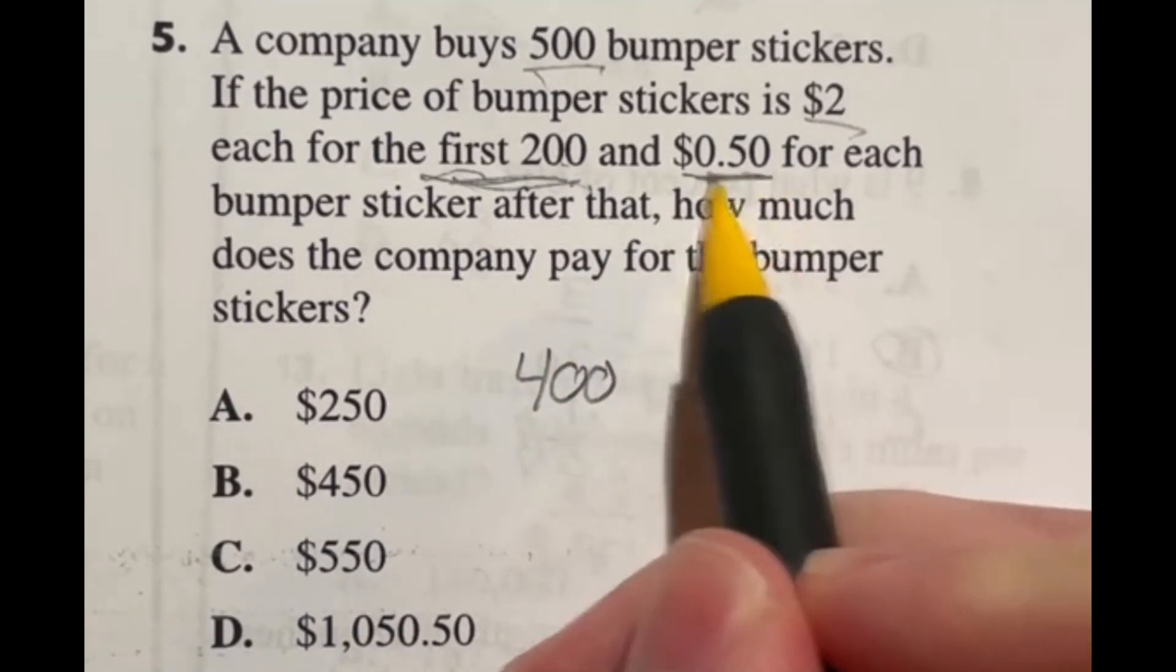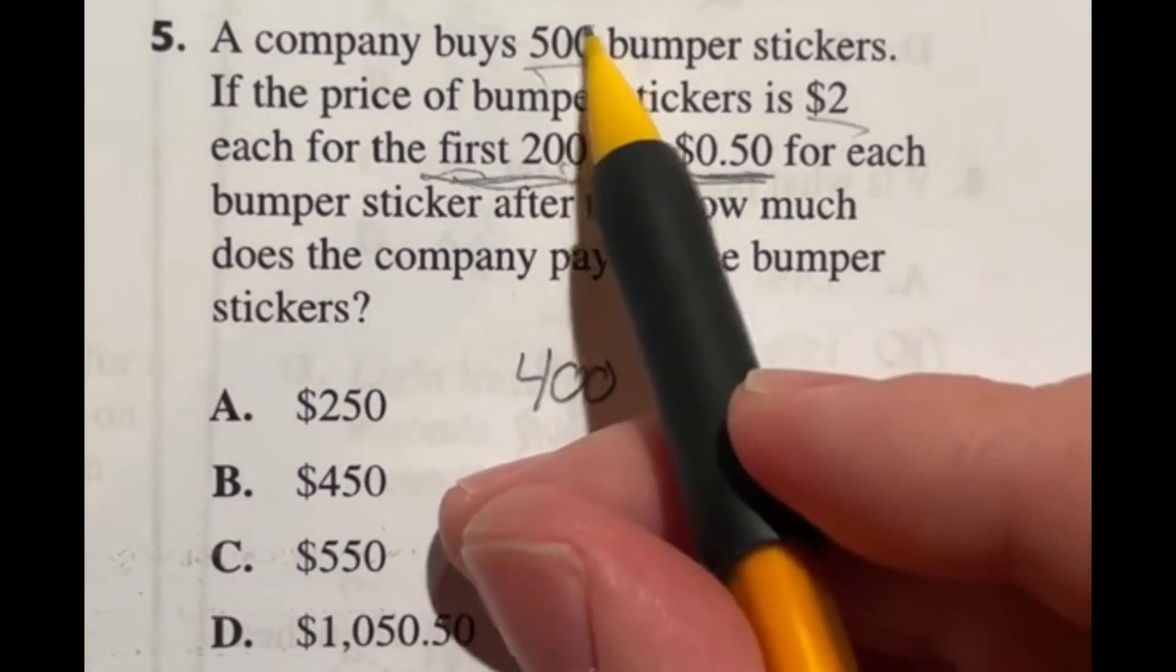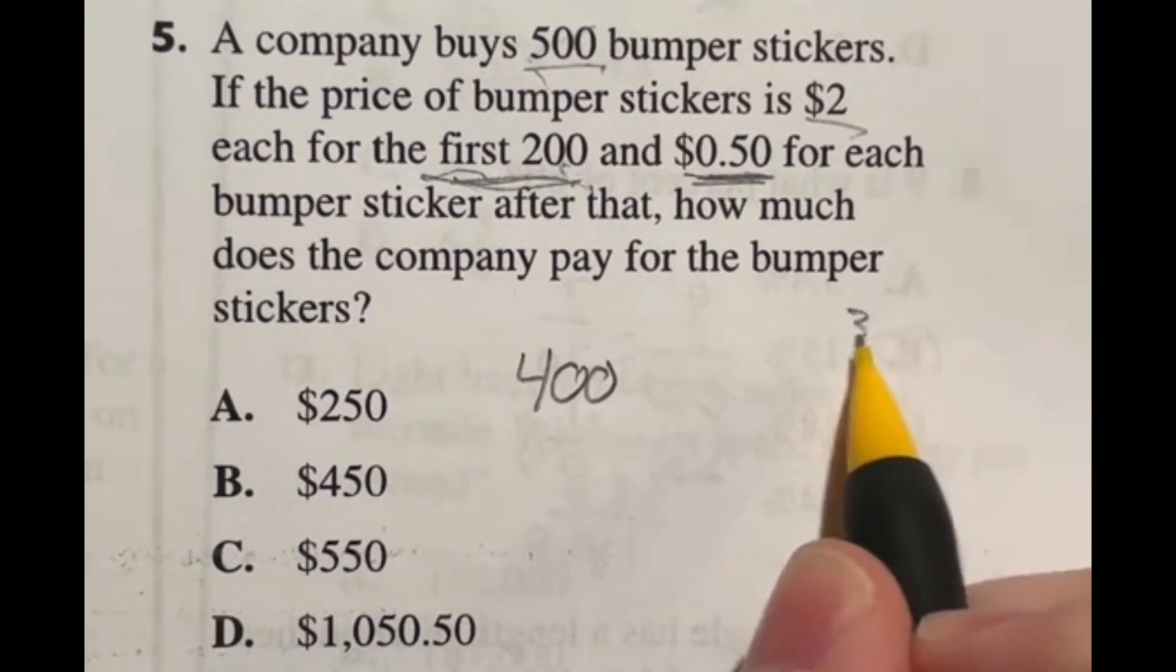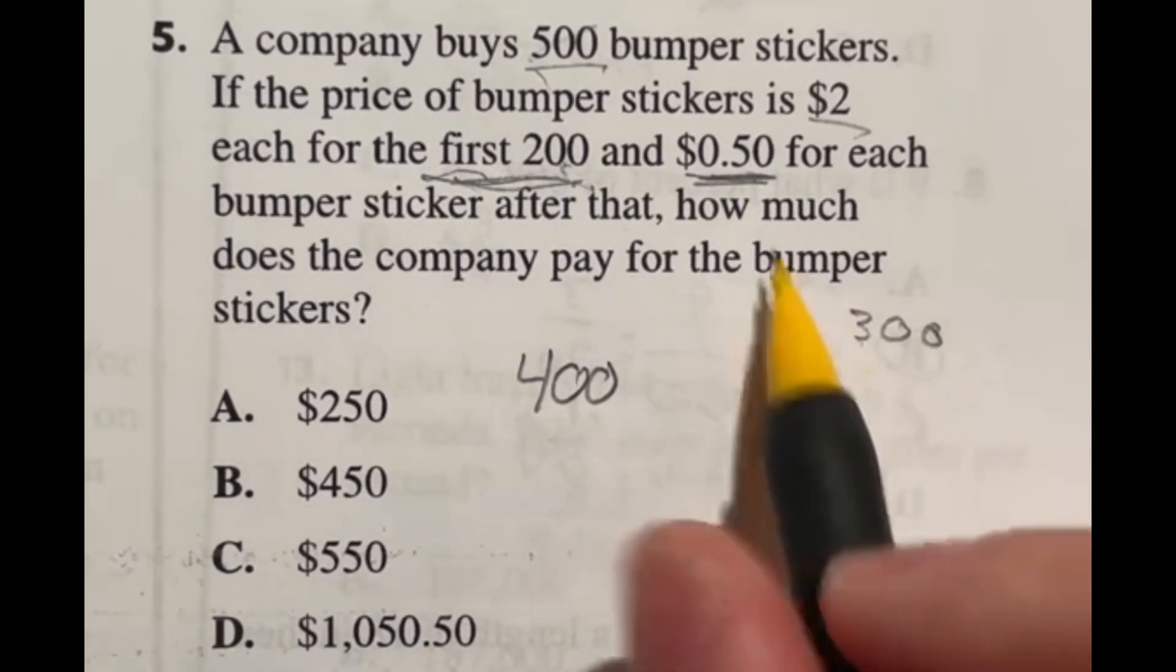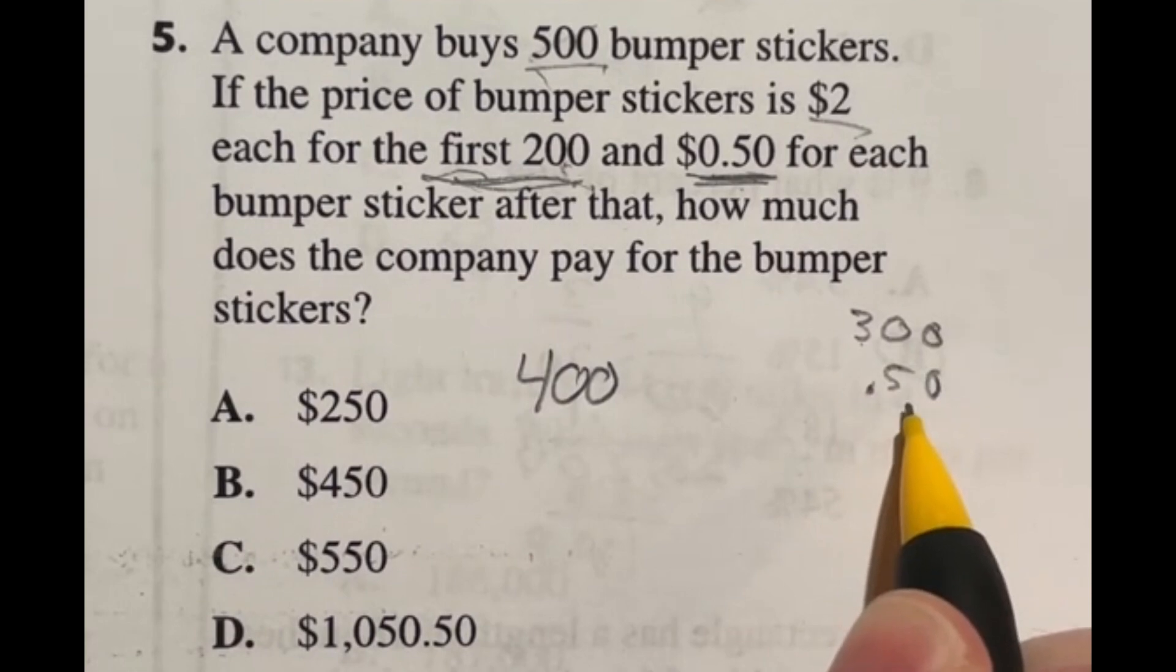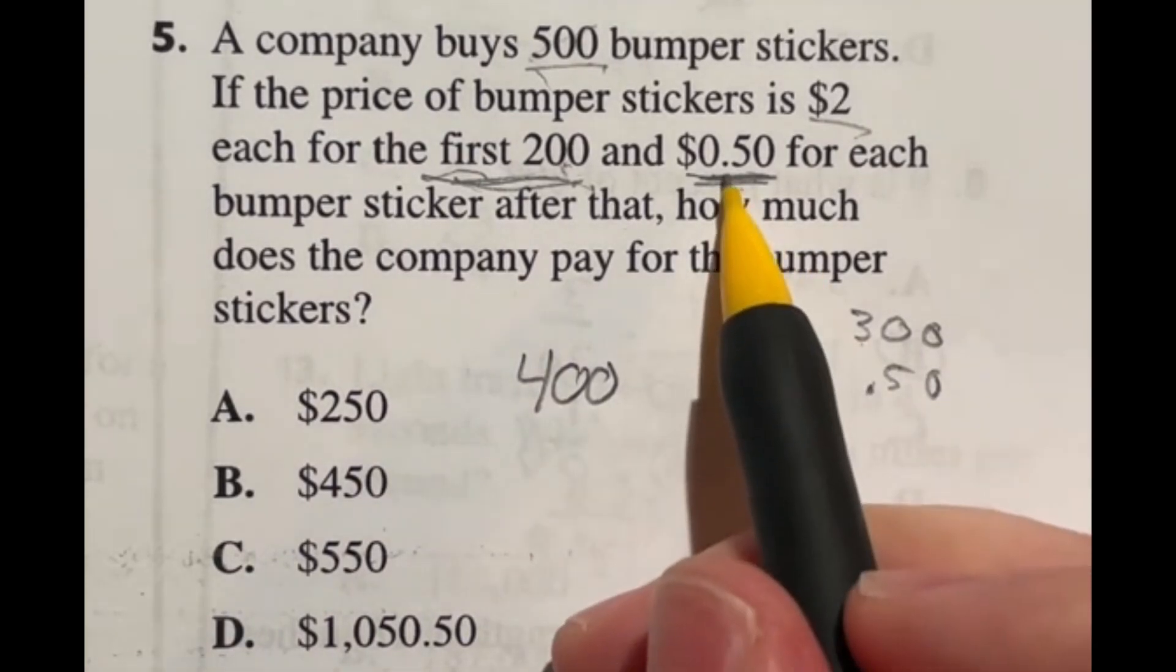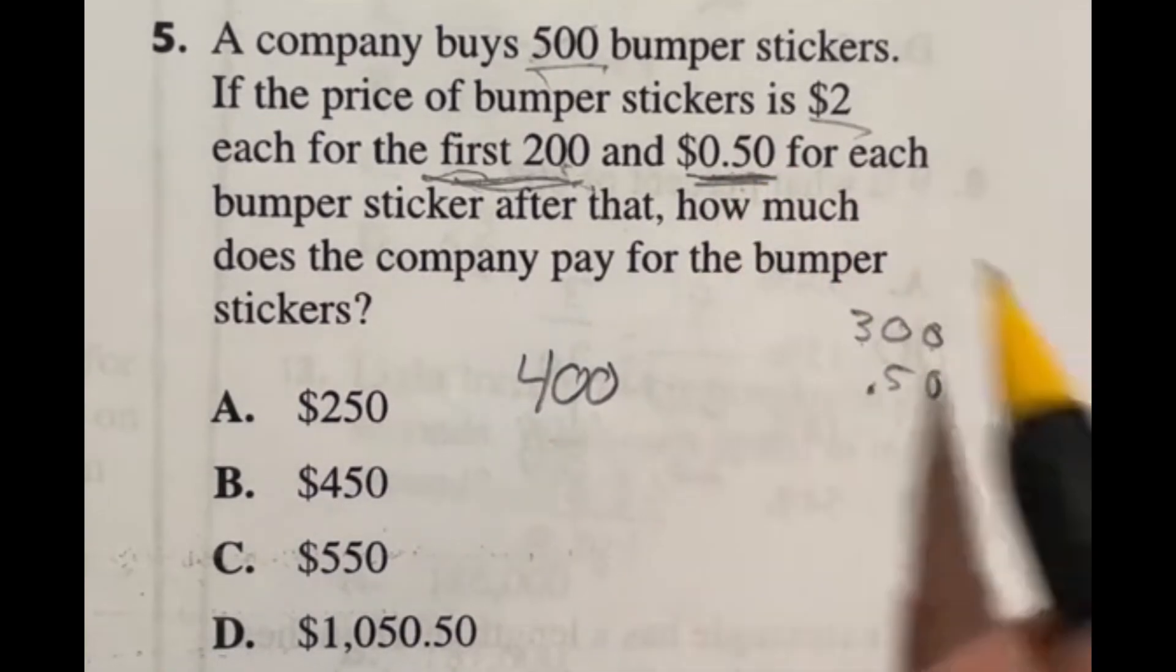Now it says after that, they're 50 cents a piece. Well, how many do we still have left? Well, we'd crossed out 200 of these. So we are left with 300 stickers left to purchase. And those 300 are going to be worth 50 cents a piece. Now you could multiply that out, but that would be silly. 50 cents is also essentially saying half of this because it's multiplying by one half or 0.5.